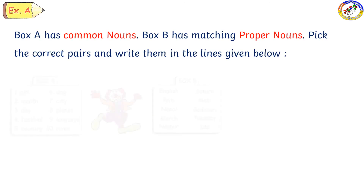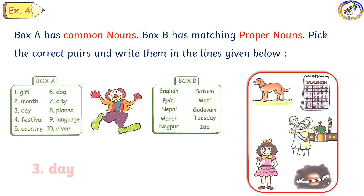Next let us look at the third one. Day — the common noun is day. We have to find the proper noun here. English, Priti, Nepal, March, Nagpur, Saturn, Moti, Godavari, and Tuesday. So day is Tuesday. The proper noun is Tuesday.